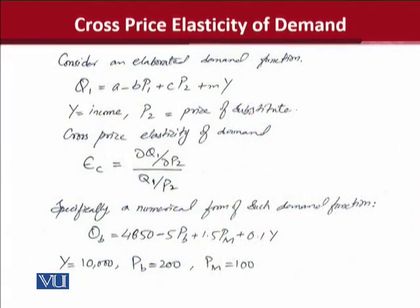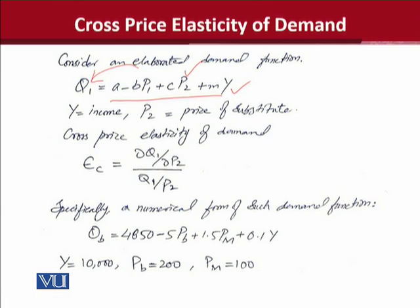This is an elaborated demand function. As you can see, the price of its own good, the price of the other related good, and income are the three independent variables explaining the effect on QD1. Here Y represents income and P2 is the price of a substitute — and this is an educated guess because substitutes have a positive sign, whereas complements have a negative sign. So the positive sign indicates that the related good is actually a substitute.